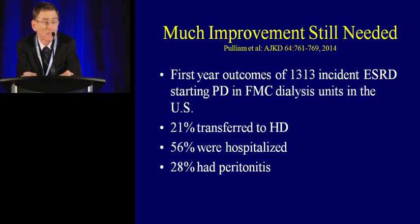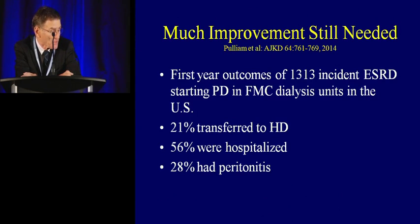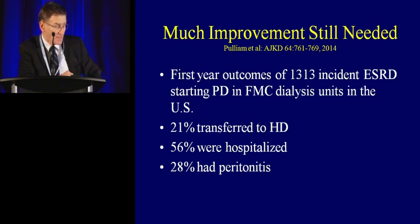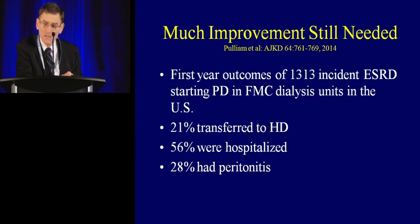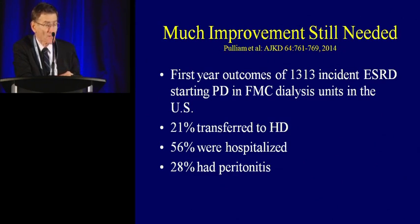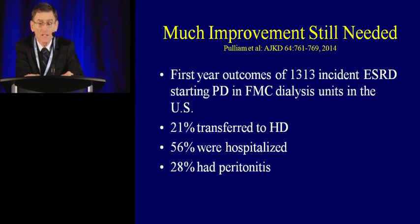The data has gotten good, but it really could be a lot better. Looking at the FNC database and first-year outcomes in 1,300 incident ESRD patients starting PD in FNC dialysis units in the United States: 21% transferred to HD, which seems high. In New England, about 15% of patients transfer each year. After two years, only about 50% remain on PD — some transferred to hemodialysis, some died, some were transplanted. Of these patients, 56% were hospitalized and 28% developed peritonitis. There's a lot of work that needs to be done.